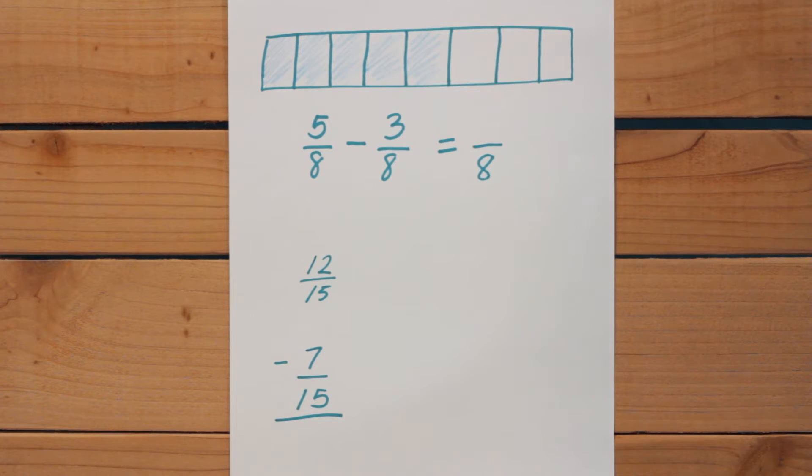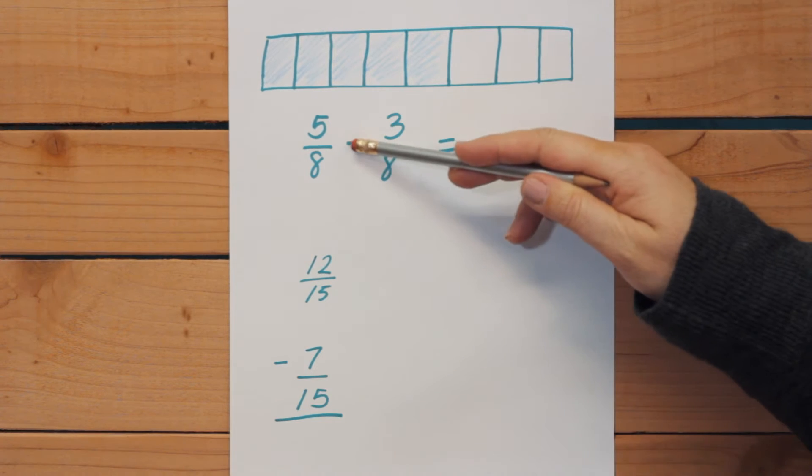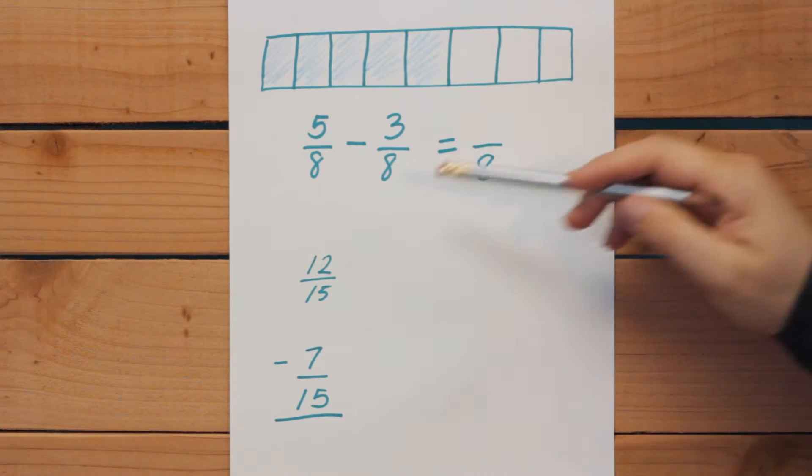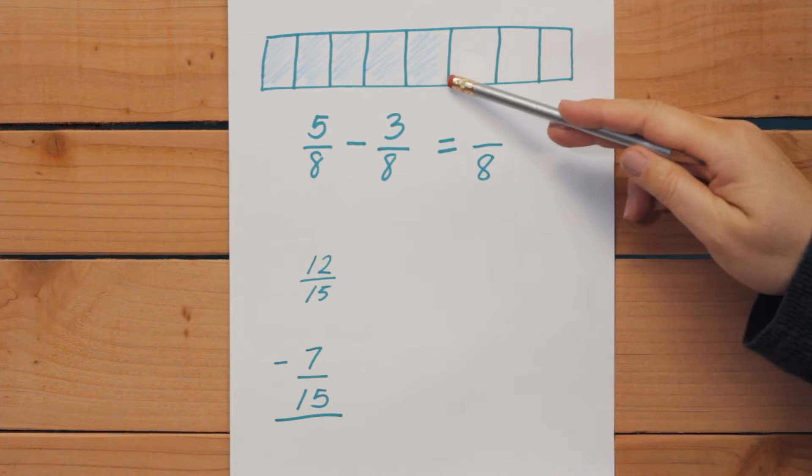So I have the problem 5/8 minus 3/8. I have this fraction bar that's in 8 parts and I've started with 5/8.